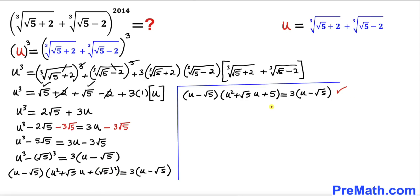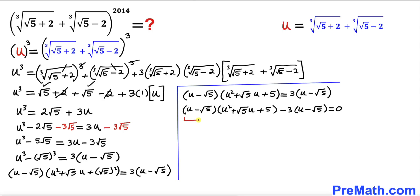Moving the right hand side over, we get (u − √5)(u² + √5·u + 5) − 3(u − √5) = 0. Factoring out (u − √5) gives (u − √5)(u² + √5·u + 5 − 3) = 0.